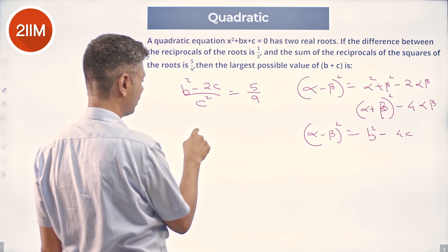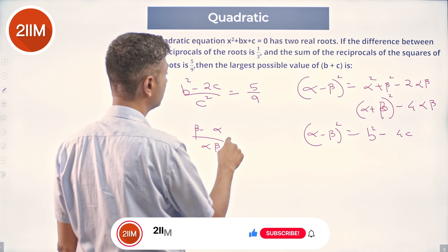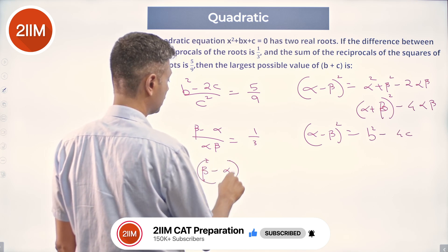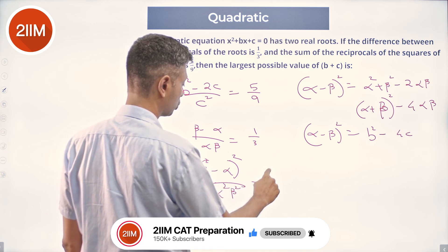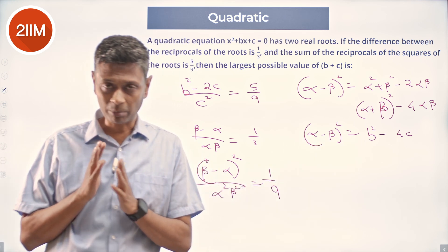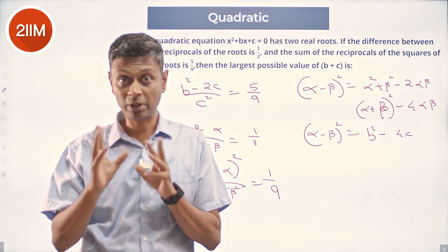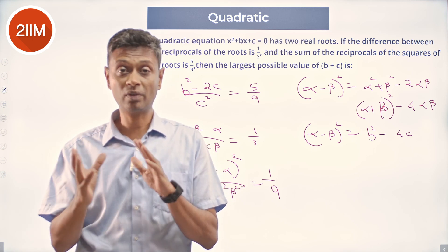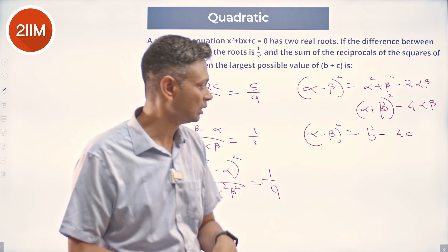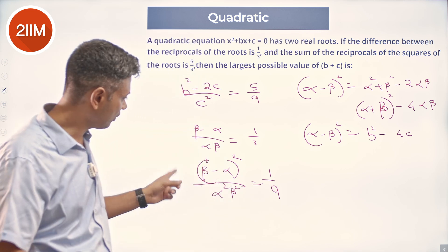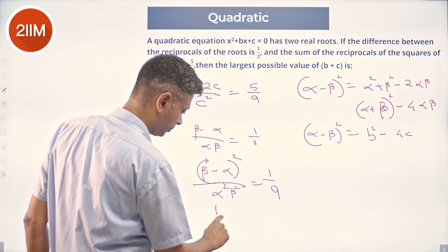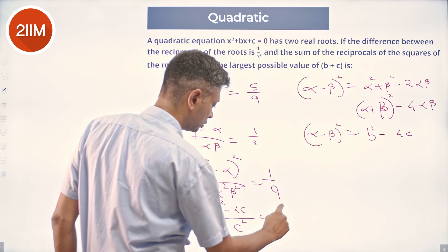From 1/α − 1/β = 1/3, we get (β − α)/(αβ) = 1/3, so squaring both sides: (β − α)² / (αβ)² = 1/9. We square it because we can express (α − β)² in terms of alpha + beta and alpha·beta. So (b² − 4c) / c² = 1/9.